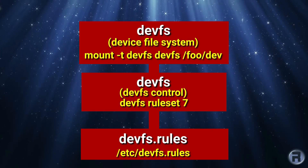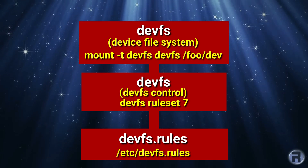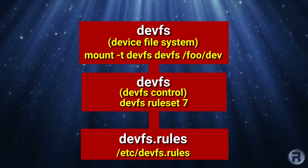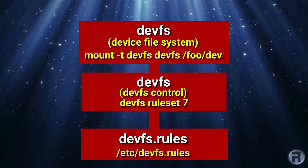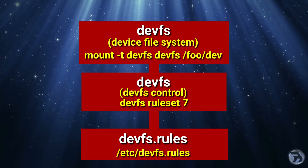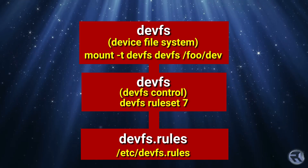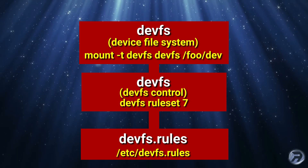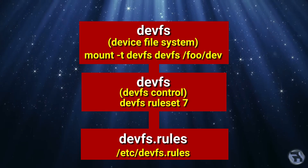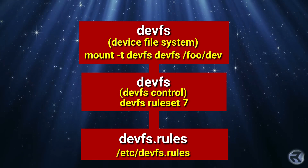Linking the bottom section — the devfs.rules — with the top, the devfs itself, this control utility can allow a user to specify which rule set to use. For example, the default rule set when FreeBSD boots is rule set zero. So with this utility, we can change the rule set for the system to use, as well as edit it to our liking.